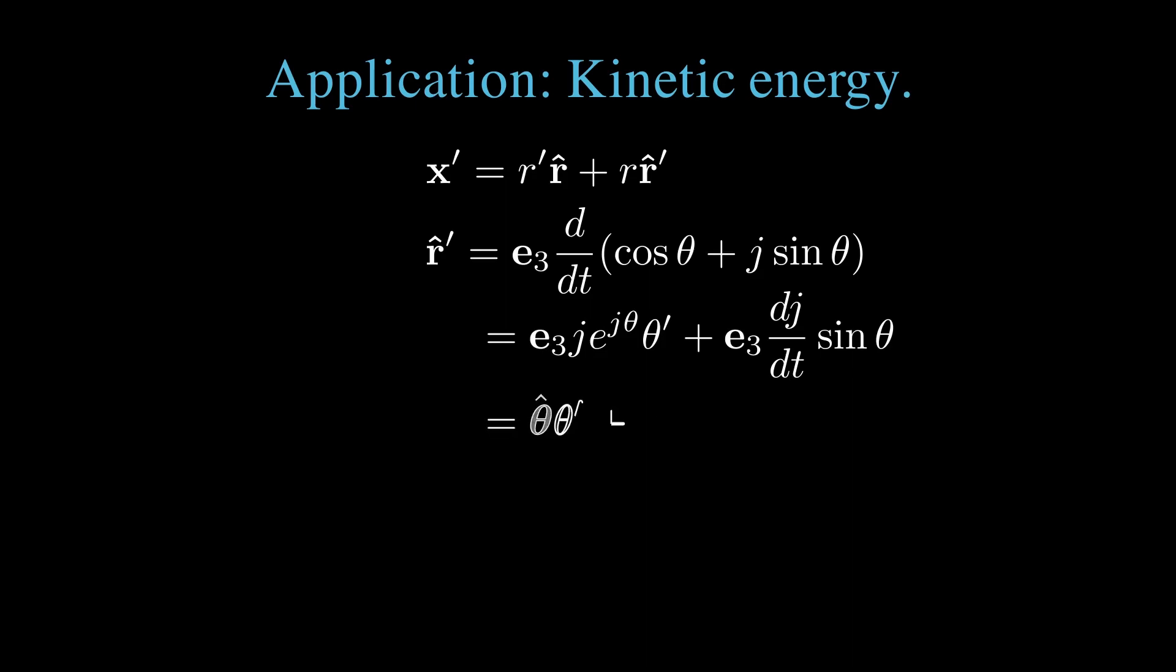Now let's apply our geometric algebra expressions for these unit vectors to find the kinetic energy in spherical coordinates. We want to find the velocity, which is d dx dt, which I'll write as x prime. That's r prime times r hat plus r times r hat prime. We want to expand out the r hat prime. r hat prime is e3 times d dt of e to the j theta. e to the j theta is cos theta plus j sin theta. We take derivatives using the chain rule, first holding j constant, then taking derivatives of j holding theta constant. That gives us e3 j e to the j theta times d dt of theta plus e3 d j dt times sin theta. e3 j e to the j theta is just theta hat. And we expand out our d j dt derivatives, giving us e3 times e3 times e1 i, which is e2, all times e to the i phi times derivative of phi times sin theta. This leaves us with theta hat theta prime plus e2 e to the i phi phi prime sin theta, which is just theta hat theta prime plus phi hat phi prime all times sin theta.